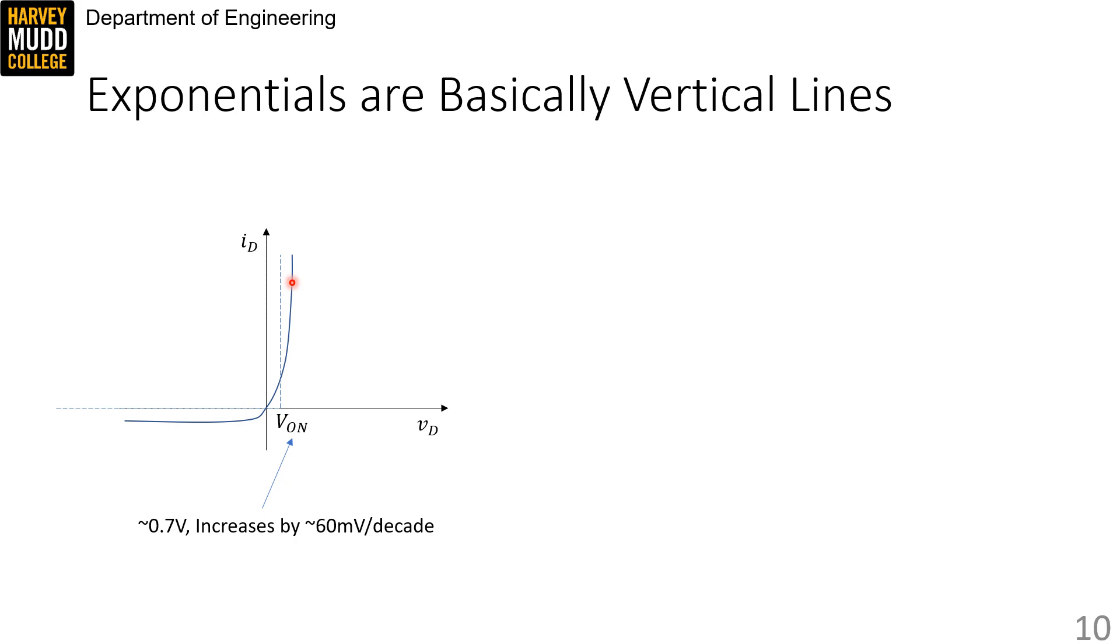That's not a lot of voltage. 60 millivolts is only three times bigger than the noise limits of our oscilloscopes, and a decade is a big change in current, so it's pretty easy to pick a decent VON value that's valid over the range of currents used in a circuit that you're interested in.